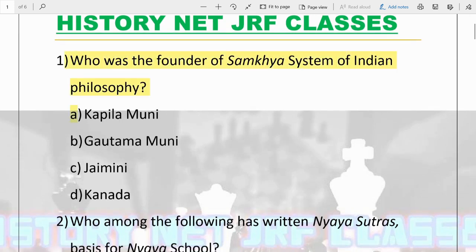The first question is: who was the founder of the Samkhya system of Indian philosophy? The options are Kapila Muni, Gotama Muni, Jamini, and Kanad. The answer is A, Kapila Muni. He propounded and was the founder of the Samkhya system of Indian philosophy.